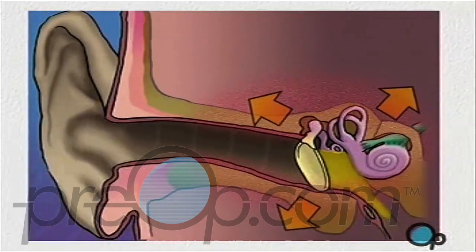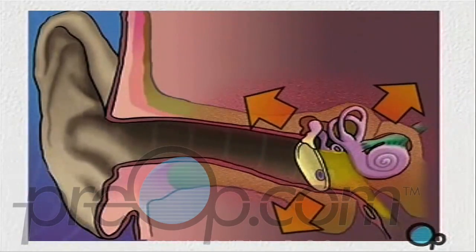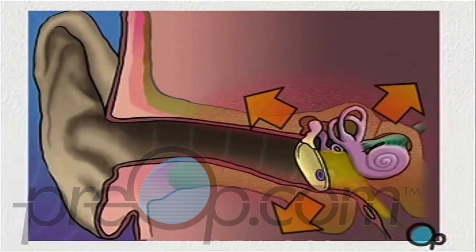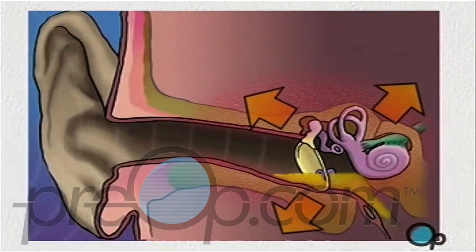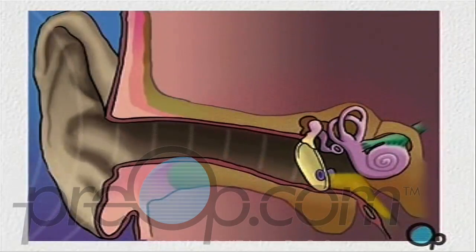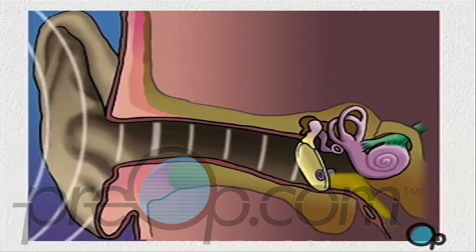A myringotomy is a simple procedure in which a small tube is inserted into the eardrum in order to allow fluids to drain out of the middle ear, reducing pressure and allowing any infection to be treated with antibiotics.